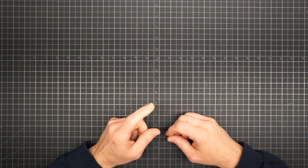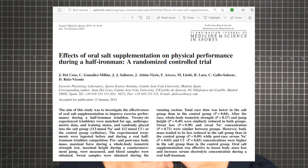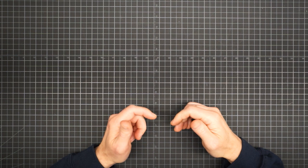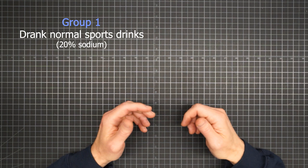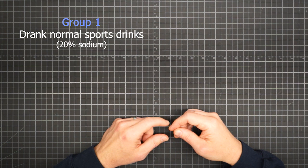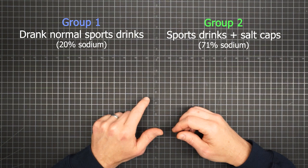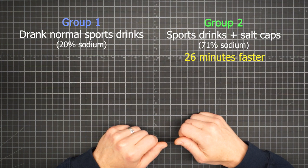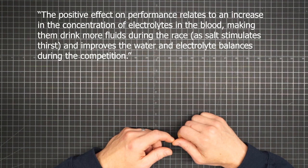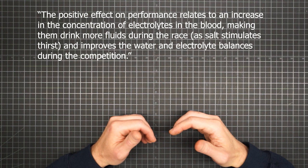Let's start with sodium, the electrolyte lost in greatest amounts per liter of sweat. Spanish researchers published this study in the Scandinavian Journal of Medicine and Science in Sports. In it, they separated triathletes performing a half Ironman into two groups. The groups were matched for age and experience. Group one drank the sports drinks they normally consumed during a race, and of note, this only replaced 20% of the sodium they lost. Group two drank their usual rehydration drinks as well, but they also supplemented that with salt capsules to replace 71% of the sodium lost through sweat. The results? Even though the sports drink only group had better times previously in a half Ironman, the salt supplementing group ended up finishing the race an average 26 minutes faster. This positive effect on performance relates to an increase in the concentration of electrolytes in the blood, making them drink more fluids during the race, as salt stimulates thirst, and improves the water and electrolyte balances during the competition.